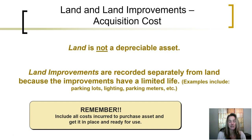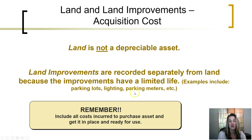Because land is not depreciable, we have to keep track of it and account for it as a separate asset from any land improvements. Even though land improvements may be intended to be permanently on the land, they do have a limited life. For example, parking lots, lighting, or parking meters — these types of things that are added to the land need to be recorded as a separate asset called land improvements.